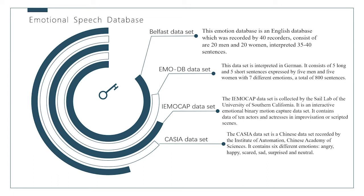The EMODB dataset contains seven emotions: neutral, angry, scared, happy, sad, disgusted, and bored. This dataset was recorded in a recording studio with a high degree of emotional freedom, a strong sense of reality, and natural emotional performance.